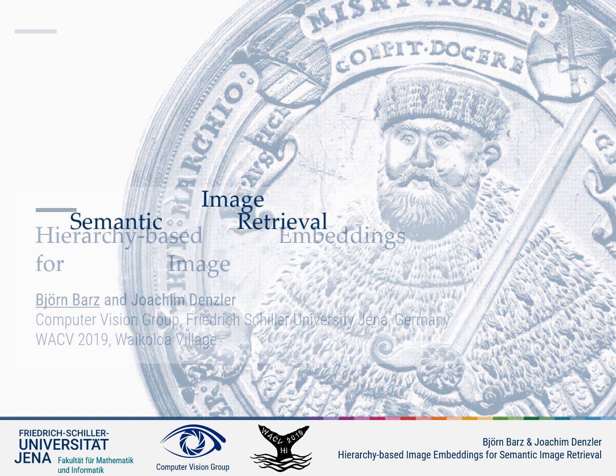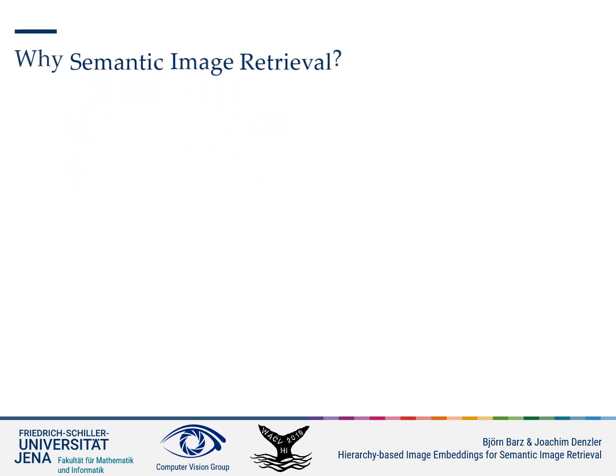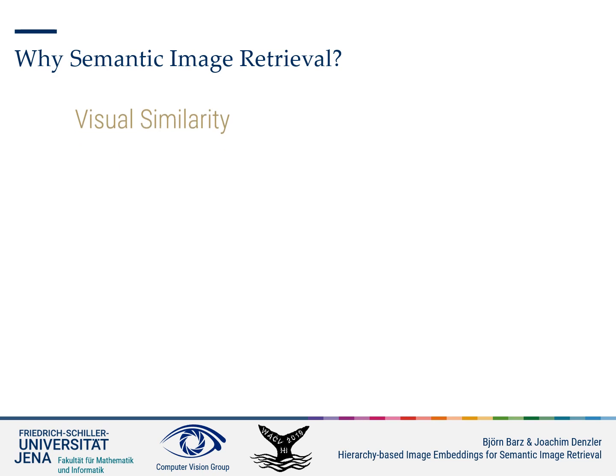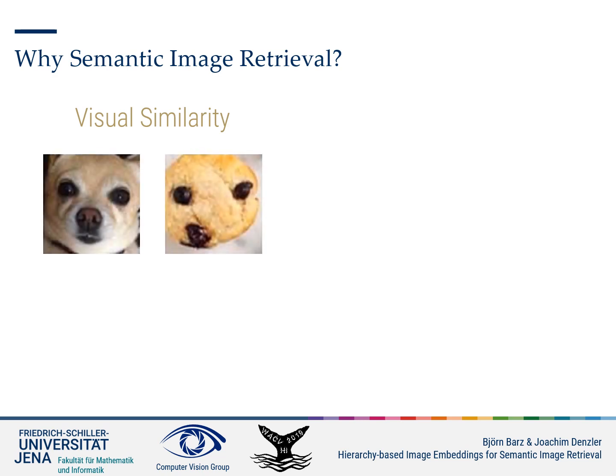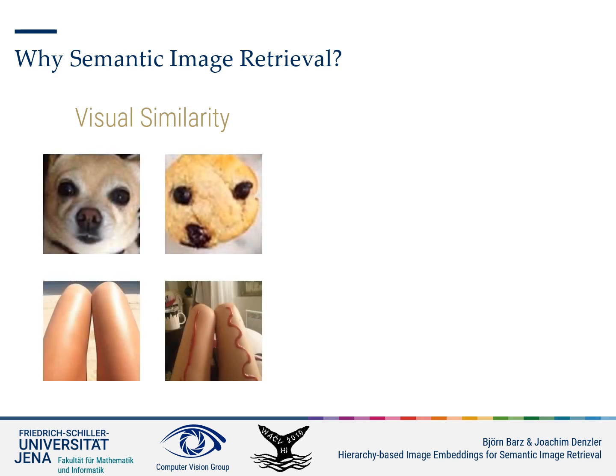Why should we care about semantics in image retrieval? What is usually done for content-based image retrieval is to extract image features from a convolutional neural network pre-trained for classification to capture the visual information contained in the image. This allows for comparing images with regard to their visual similarity. However, visual similarity does not always correspond to semantic similarity, as can be seen by these examples.